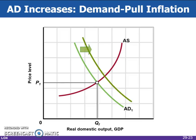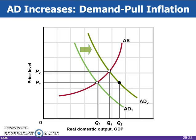This figure shows an increase in aggregate demand that causes demand-pull inflation. The increase in aggregate demand from AD1 to AD2 causes demand-pull inflation, shown as the rise in the price level from P1 to P2. It also causes an inflationary GDP gap of Q1 minus QF.